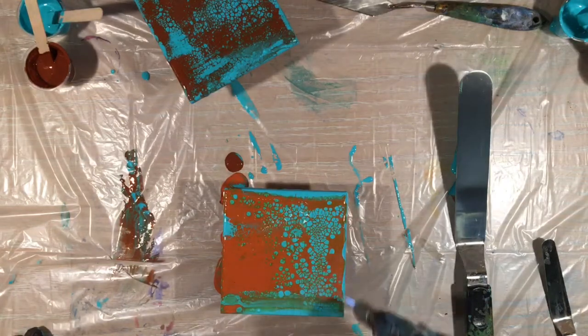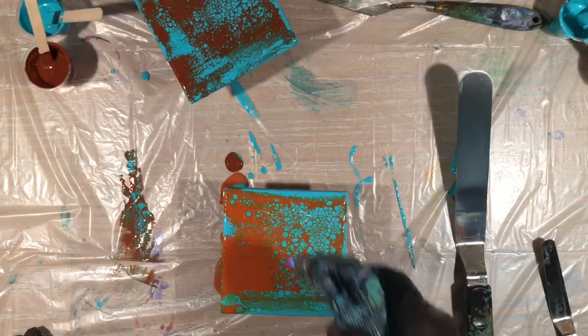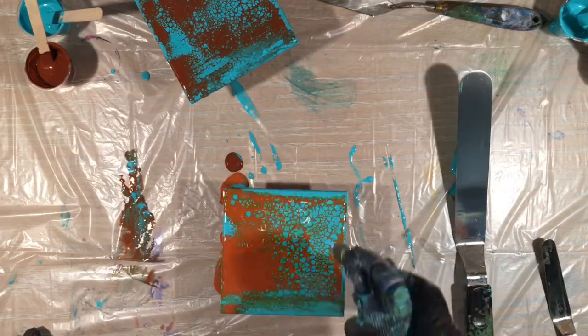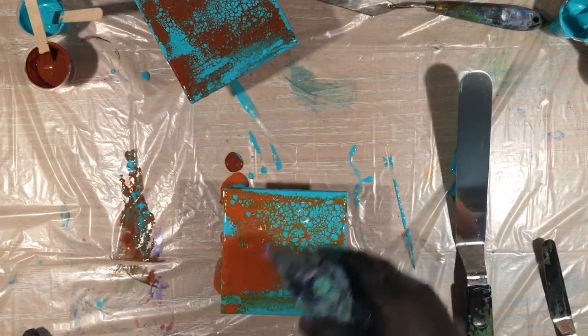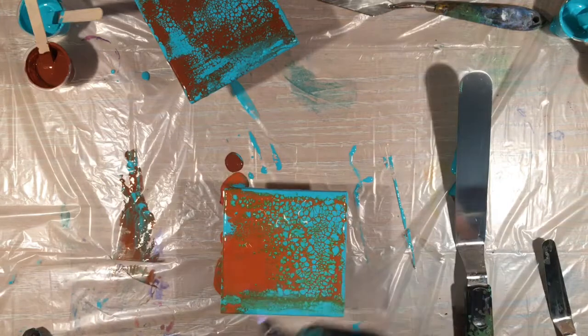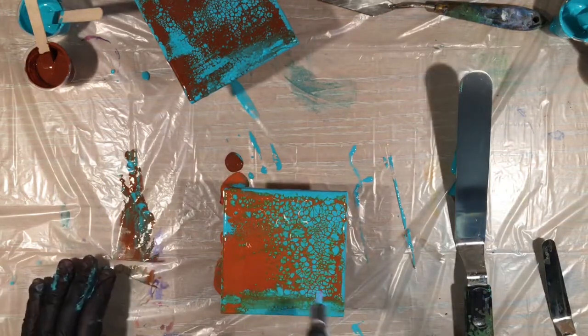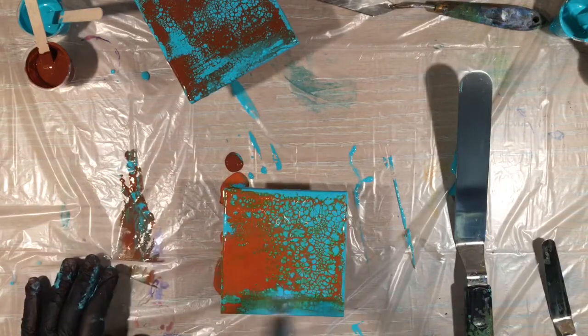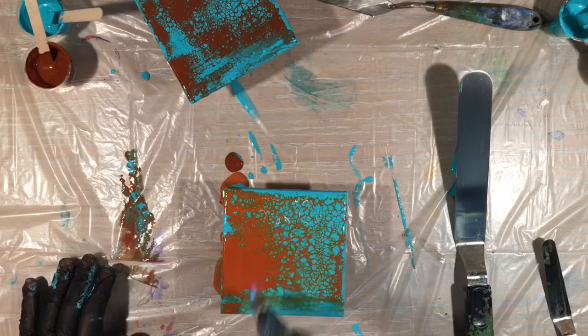And honestly, I want to say that the golden fluid acrylics cell a lot faster. I'm getting bigger cells. More defined. And I think it has a lot to do with the transparency of this paint. Because it is very transparent. I really do like this. The golden fluid acrylics.